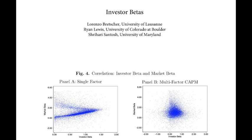I think we all agree that this is super intuitively appealing — the idea that covariance risk emerges as what matters for asset allocation. Higher covariance means you'd have to have higher returns to put an equal weight for that asset in your portfolio.